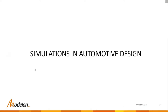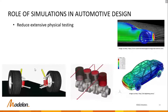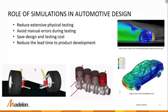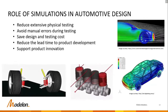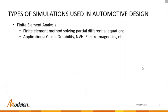Since we've talked about models and simulations, let's go deeper into simulations in automotive design. Simulations reduce extensive physical testing, avoid manual errors and retesting, save design and testing cost, reduce lead time to product development, and support product innovation. Types of simulations used include finite element analysis, which follows the finite element method solving partial differential equations, with applications in crash analysis, durability analysis, NVH analysis, and electromagnetic analysis.